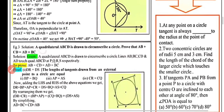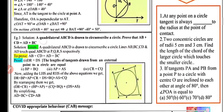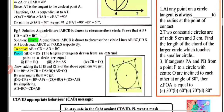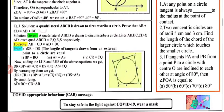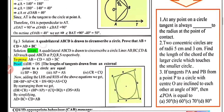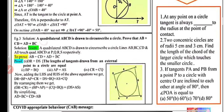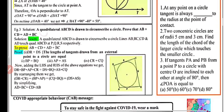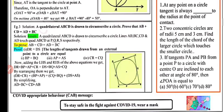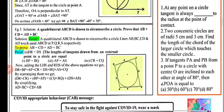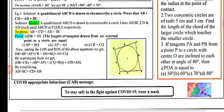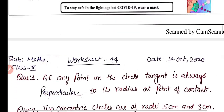Practice question 1: At any point on the circle, the tangent is always perpendicular to the radius at the point of contact. So the answer is 'perpendicular'.